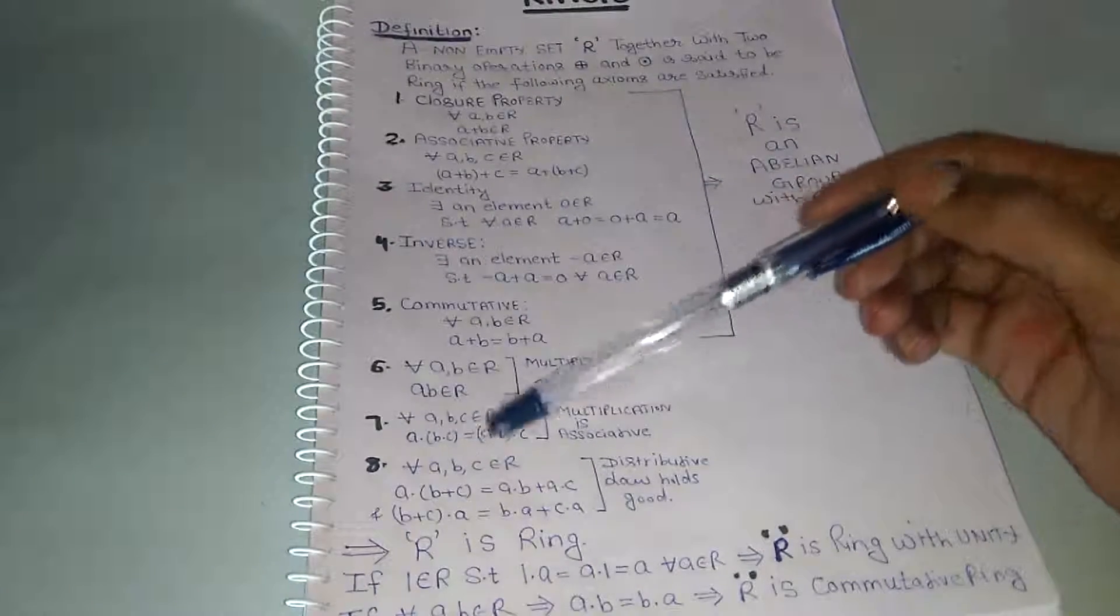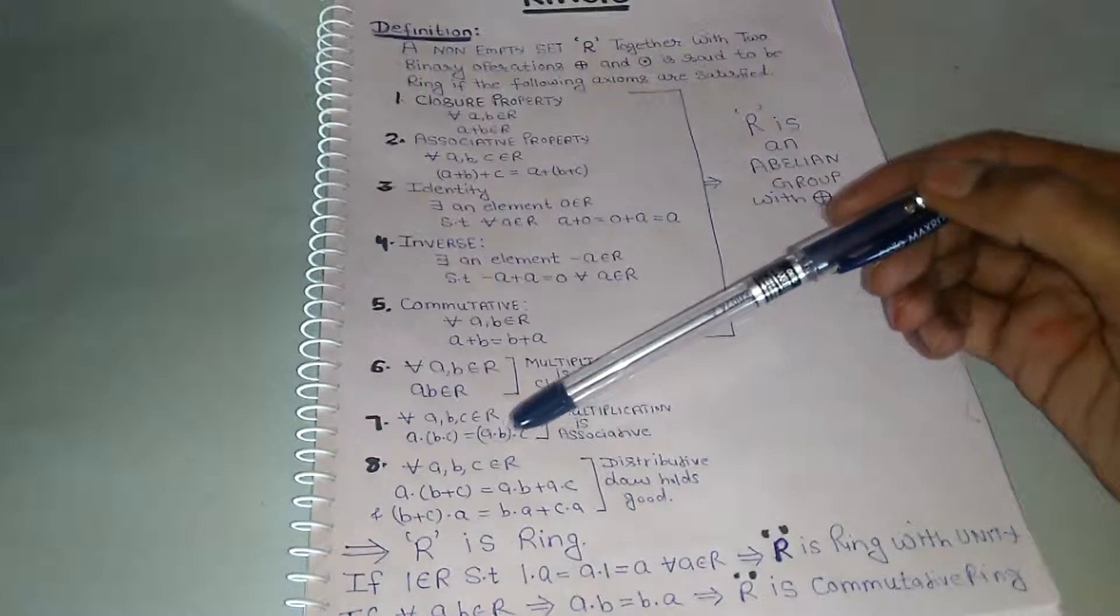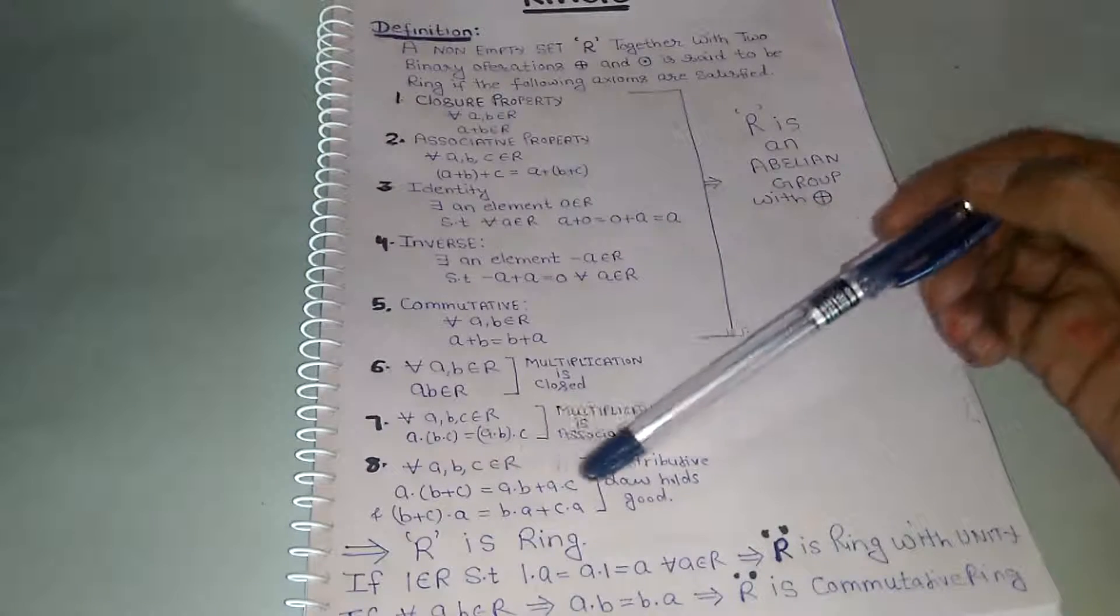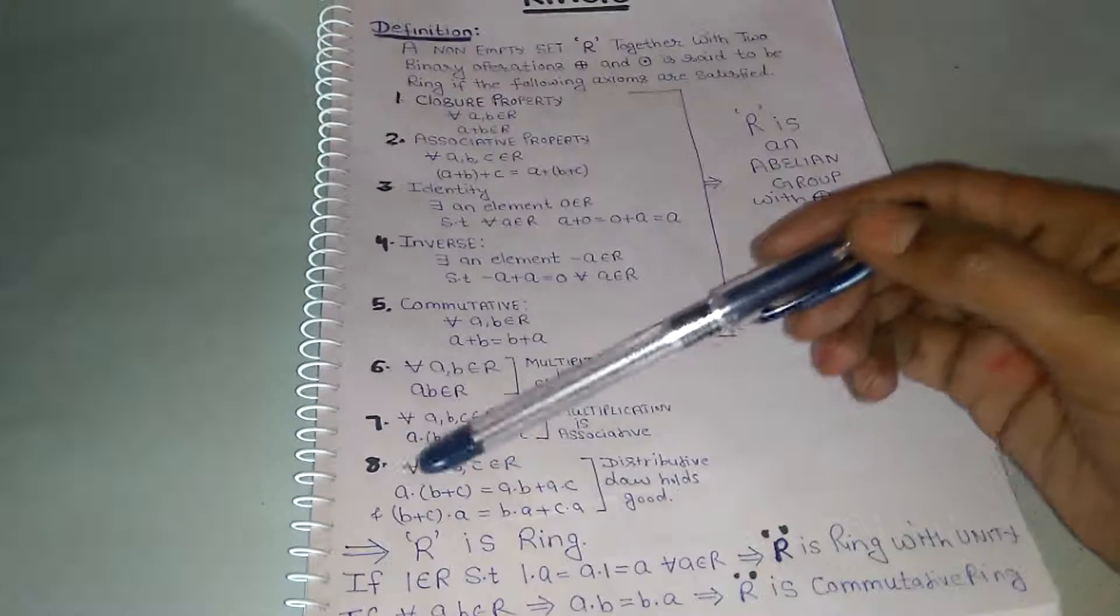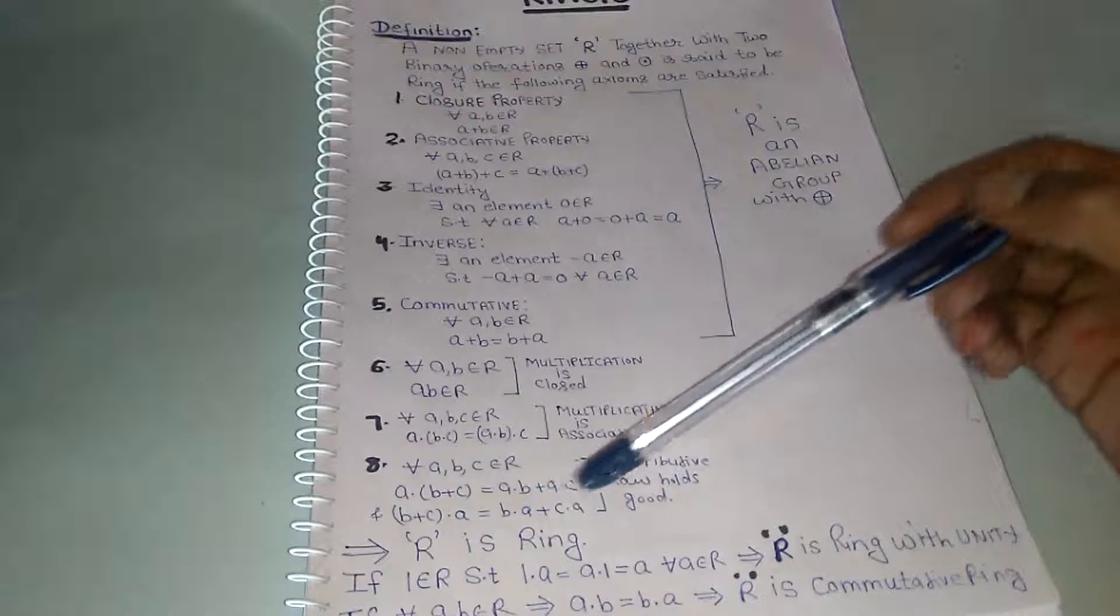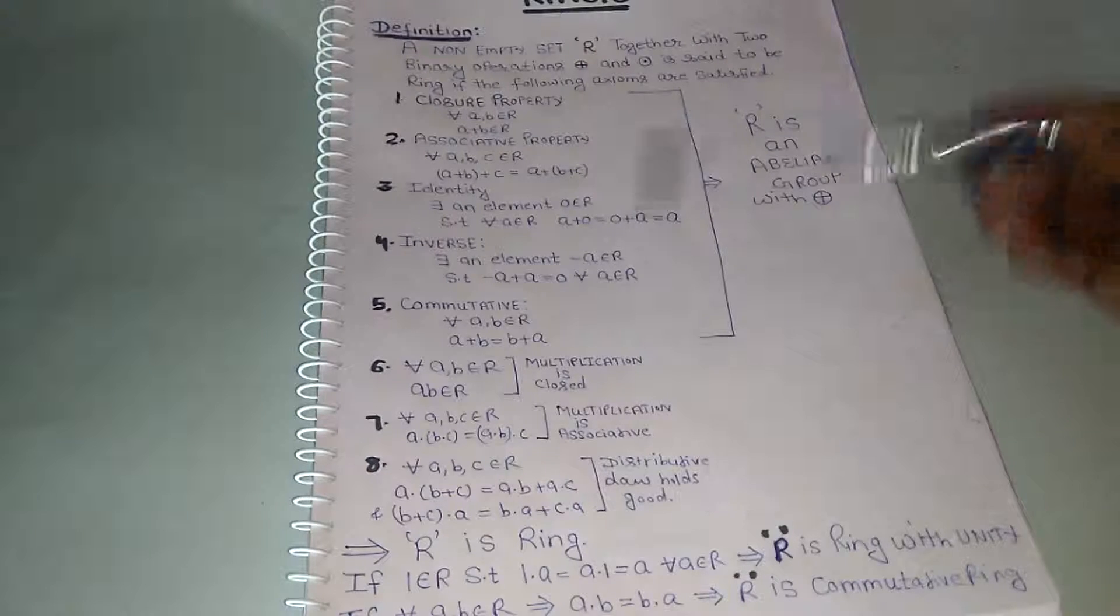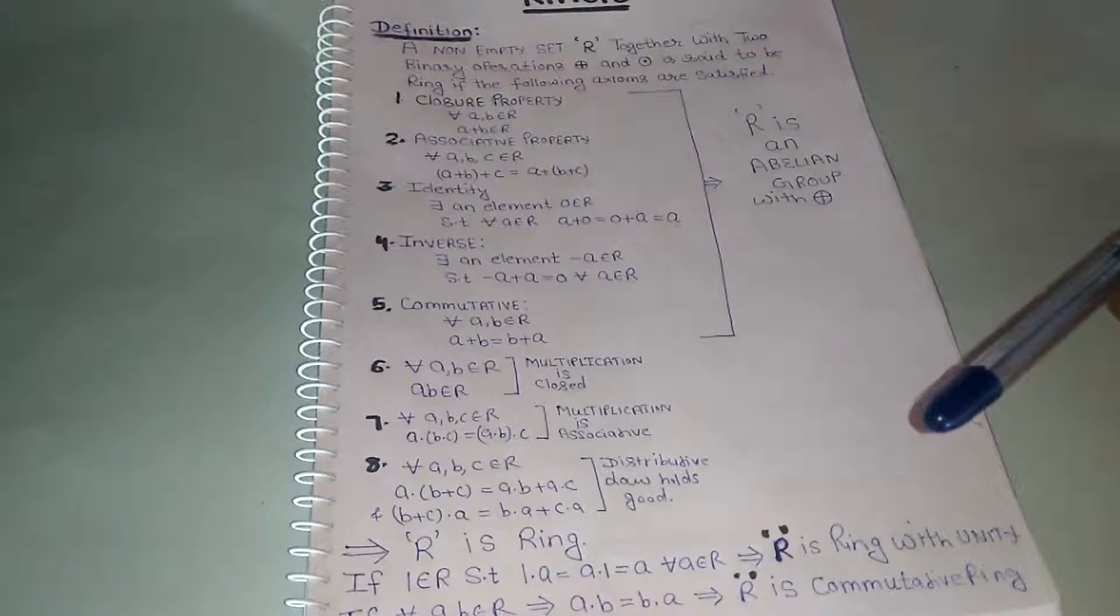Eighth one is: for all A, B, C belongs to R, if we have A dot (B plus C) is equal to A dot B plus A dot C, or (B plus C) dot A is equal to B dot A plus C dot A, meaning distributive law holds good, then we say that R is a ring.